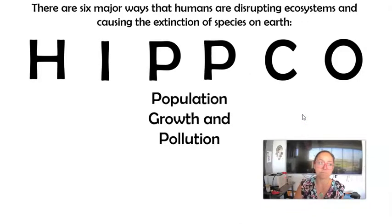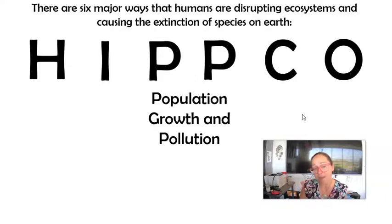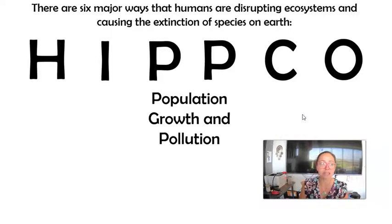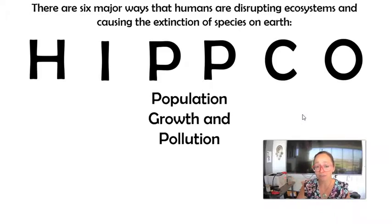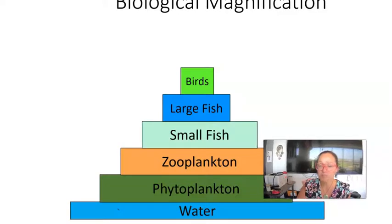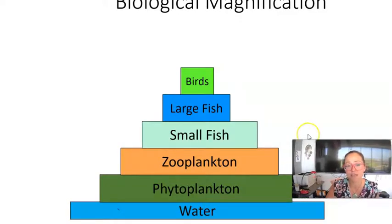Now let's talk about pollution. Pollution is an abiotic factor, and if you think deeply about it in an ecosystem, it's a density-independent limiting factor on populations. It can limit population growth depending on how it impacts different populations and ecosystems.